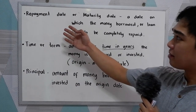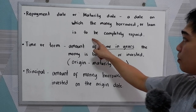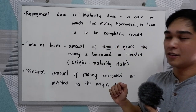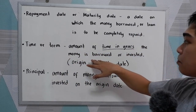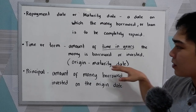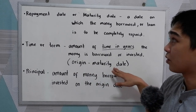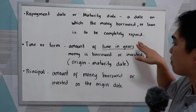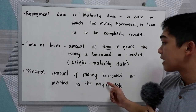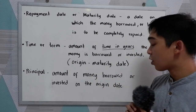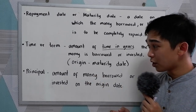We also have the repayment date or maturity date: the date on which the money borrowed or loan is to be completely repaid. Time or term is the amount of time in years the money is borrowed or invested — from the starting or origin date to the maturity date when you have completely repaid the money. And of course, we have the principal: the amount of money borrowed or invested on the origin date — the actual amount you borrowed from the lender.